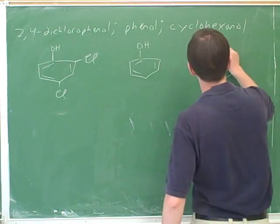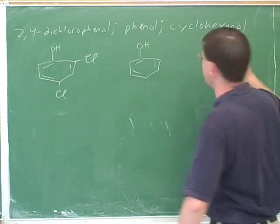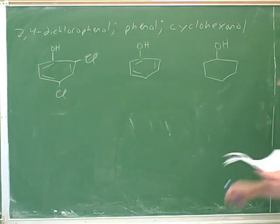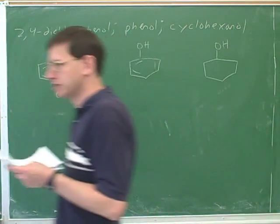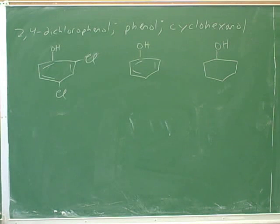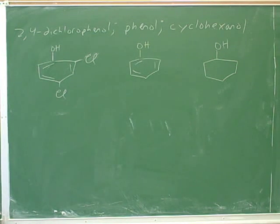The first step is to actually draw the structures. We don't want to just picture these in our heads — we should actually draw them. Then we can label: most acidic, moderately acidic, and least acidic.